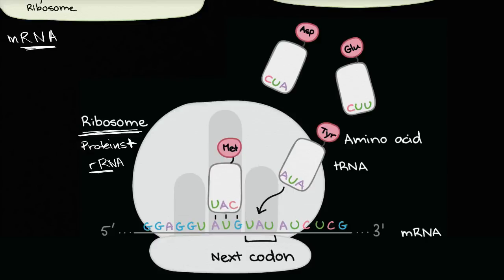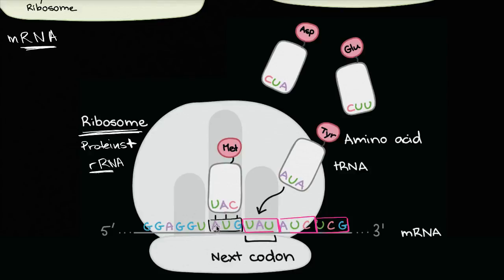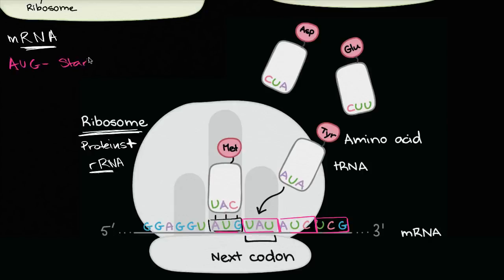How does that actually happen? Every three nucleotides, we call that a codon. The information is encoded in the nitrogenous bases. The first codon here is AUG — adenine, uracil, and guanine — and this codon codes for the amino acid methionine. AUG is known as the start codon, and this is where the ribosome will initially attach to start translating that messenger RNA.